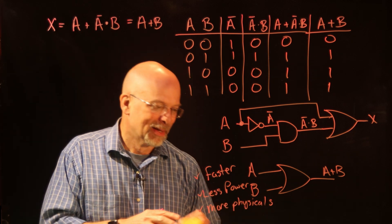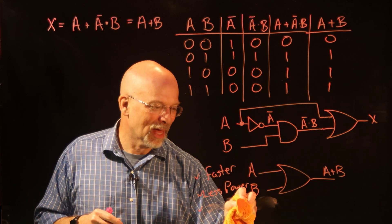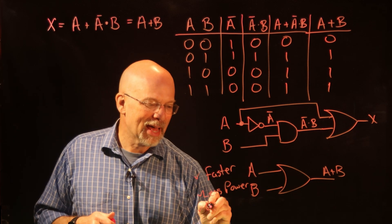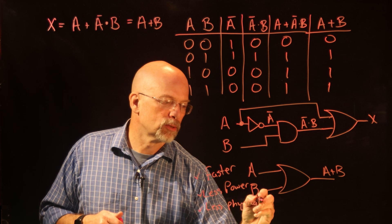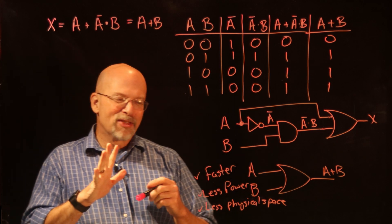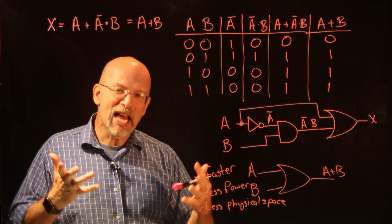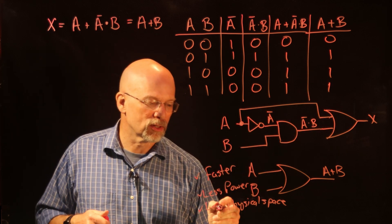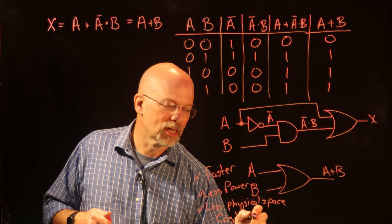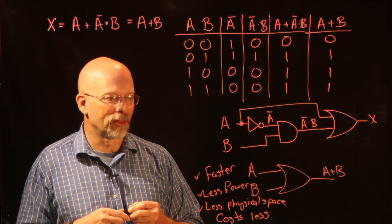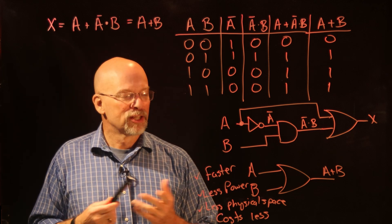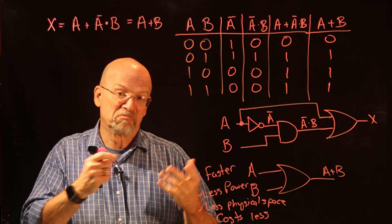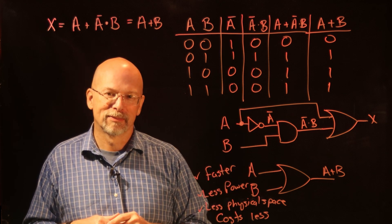Let me correct that — the bottom circuit requires less physical space. And closely related: the top circuit takes more transistors, the bottom one fewer transistors, which means it also costs less. So in every way — speed, power, physical space, and cost — the bottom circuit is better than the top circuit. How do we know they're interchangeable? The truth table proves it.